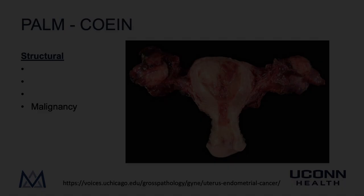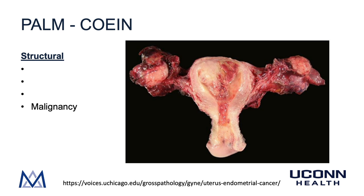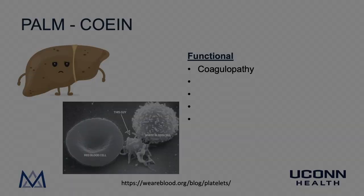Finally, the M in PALM stands for malignancy. As can be seen in this picture, there is a malignancy arising from the endometrium of the uterus. Endometrial hyperplasia is also included under M in PALM, as this is often a precursor to malignancy. The workup for structural causes of abnormal uterine bleeding includes a history, physical exam, ultrasound of the pelvis, and endometrial sampling — performed by pipelle aspiration in the office or with D&C hysteroscopy in the operating room.